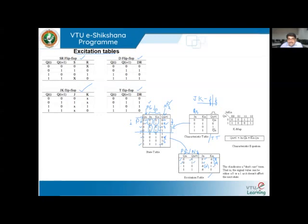For present state Qn=1 and next state Qn+1=1: J varies between zero and one across those rows, while K remains fixed at zero. So J is don't care and K=0. To summarize the complete JK excitation table: (0→0): J=0, K=X; (0→1): J=1, K=X; (1→0): J=X, K=1; (1→1): J=X, K=0.